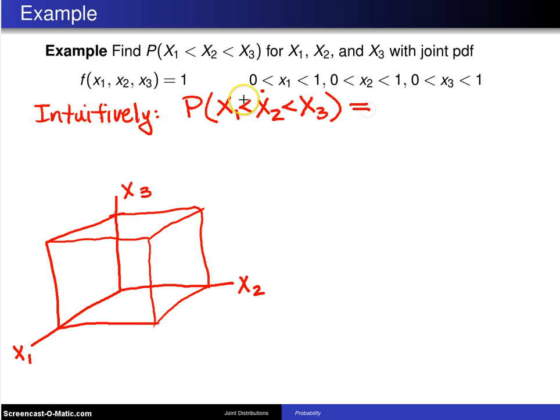So intuitively, one of those should not have any greater probability than another. So intuitively, this answer should be 1 sixth. And in fact, it is 1 sixth.